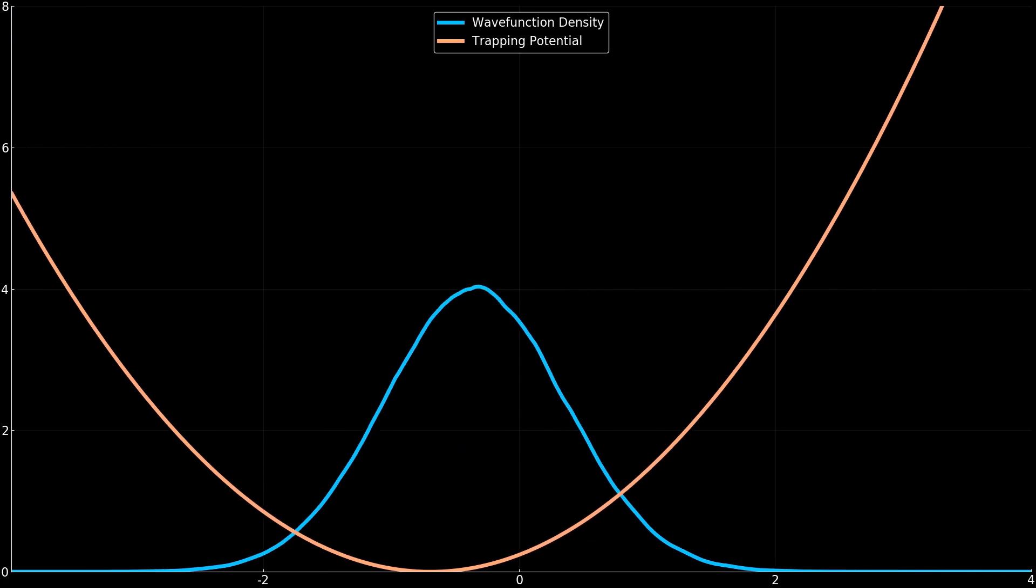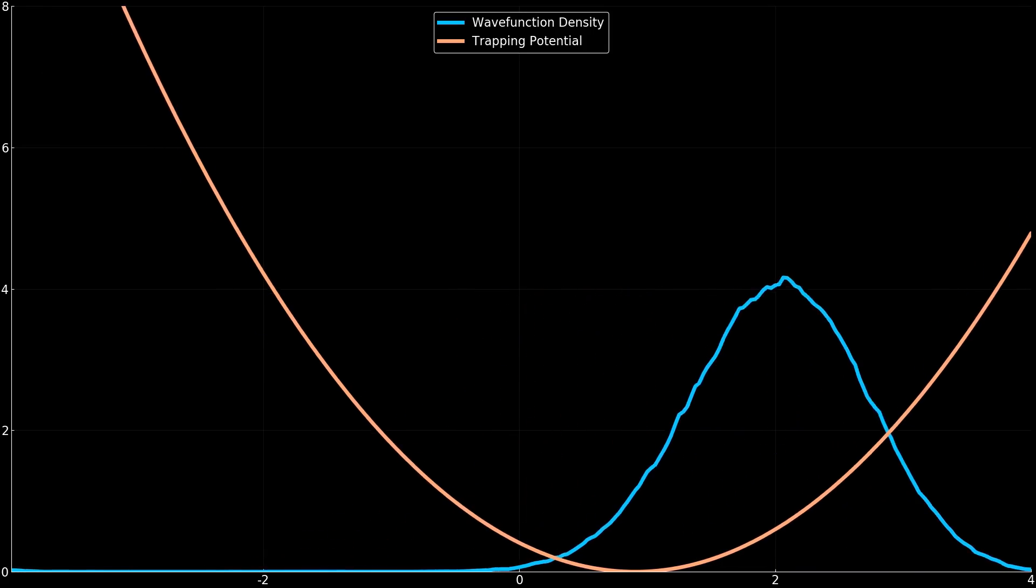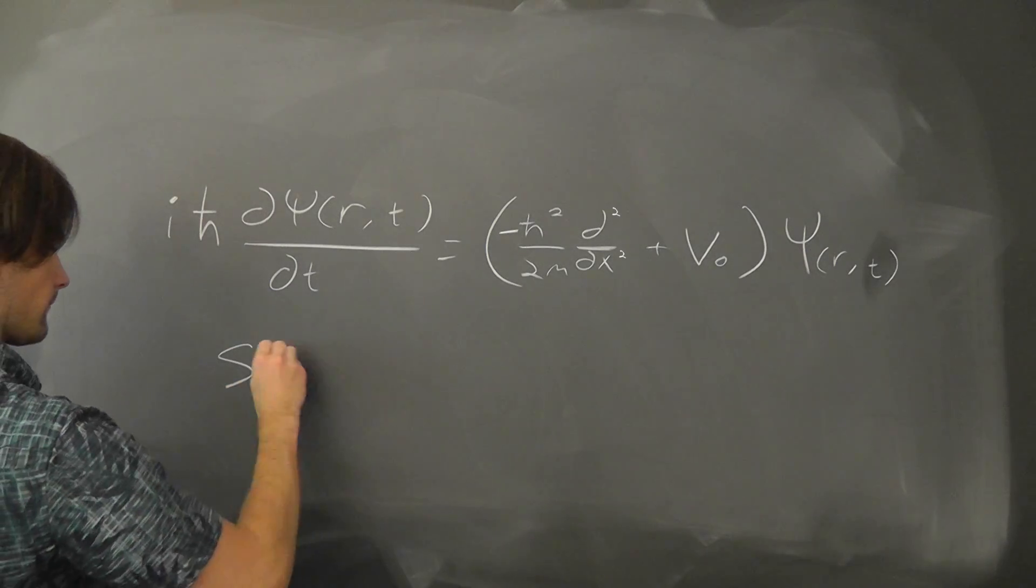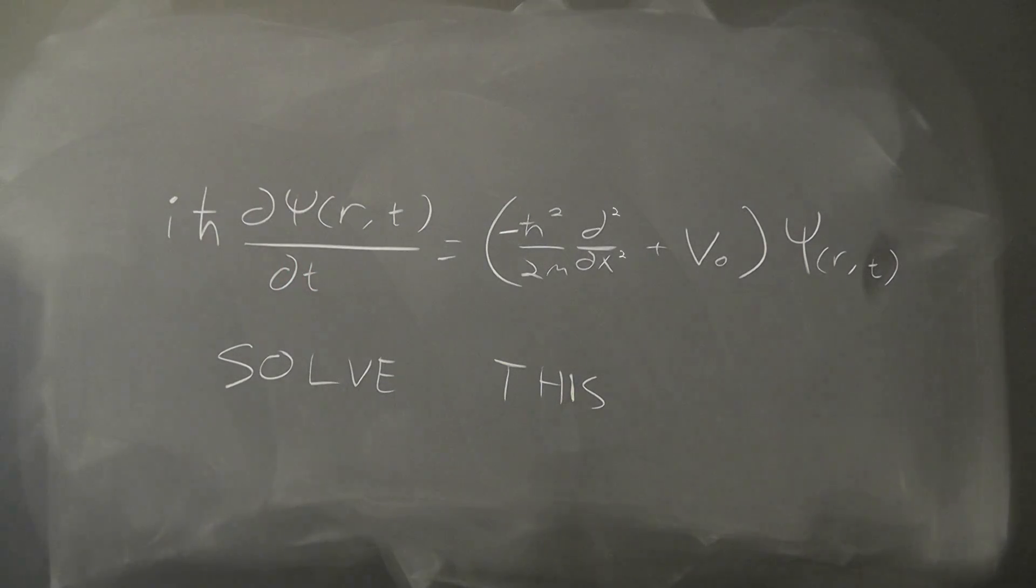So let's say you want to simulate quantum systems, like the 1D simulation shown here. Well, it seems simple enough. All you need to do is solve the Schrödinger equation. But that might be a little easier said than done.